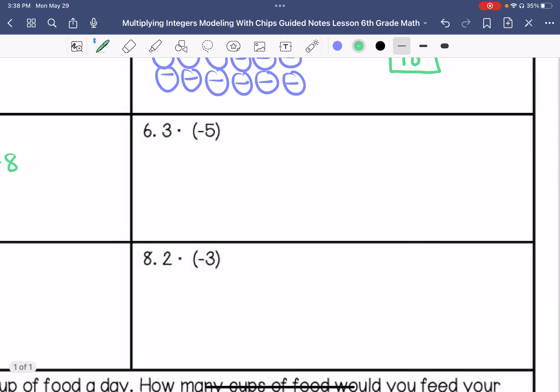Alright, number 6 is 3 times negative 5. So I'm going to do 3 groups of negative 5, or you can do 5 groups of negative 3. Alright, and that's going to end up being negative 15.